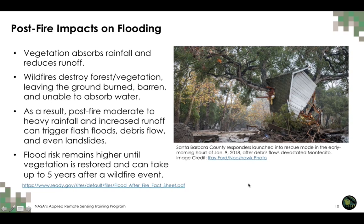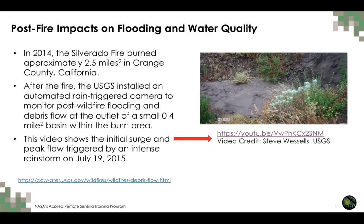There is an example here of a post-fire mudslide that occurred in 2018 in Santa Barbara County, California. There was great devastation and a lot of infrastructure got damaged in the Montecito area. A USGS video taken from an automatic rain-triggered camera shows post-fire flooding in Orange County, California following the Silverado Fire, which burned about two and a half square miles. After the fire, a heavy rain event caused flooding and this stream received a lot of poor quality water.